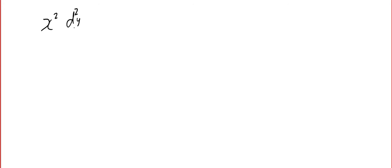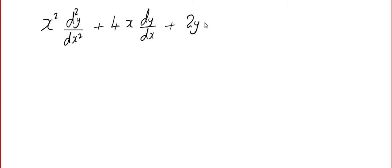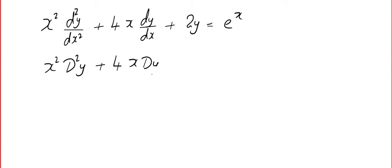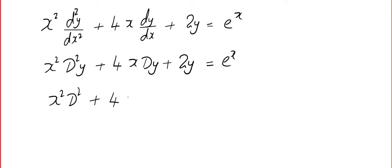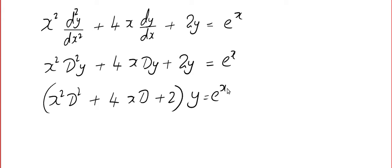Those students who know the Cauchy-Euler equation will immediately recognize this equation. This is the differential equation: x² d²y/dx² plus 4x dy plus 2y is equal to e to the power x. That is (x²D² + 4xD + 2)y = e^x. This is what you call the Cauchy-Euler equation.